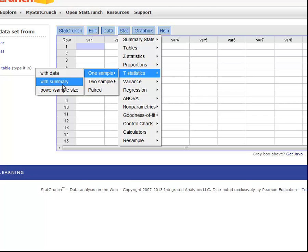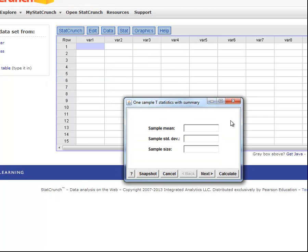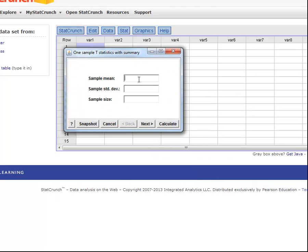Go ahead and write this down: t statistic, one sample, then with summary. After that, it's really easy. Just enter the information it asks for. The sample mean was 4.8, the standard deviation was 2.2, and the sample size was 80. That's all there is to it. I just hit next, and then I hit confidence level or confidence interval, and I just need to adjust this to whatever we want. Since it's already 95%, I just hit calculate.